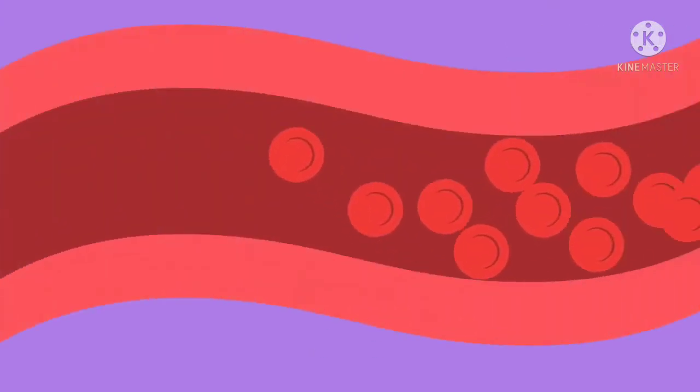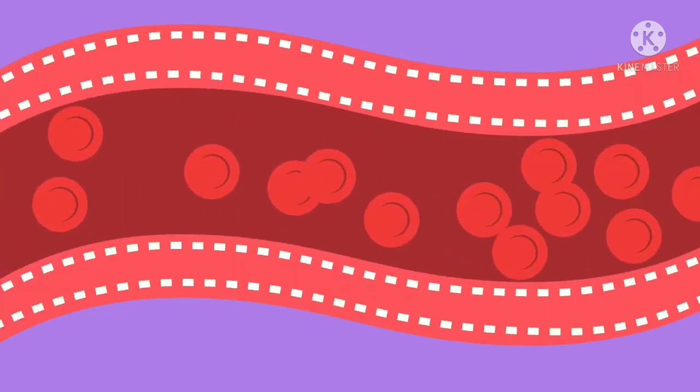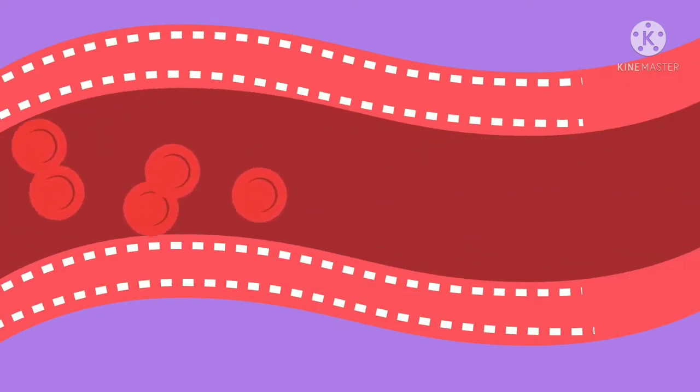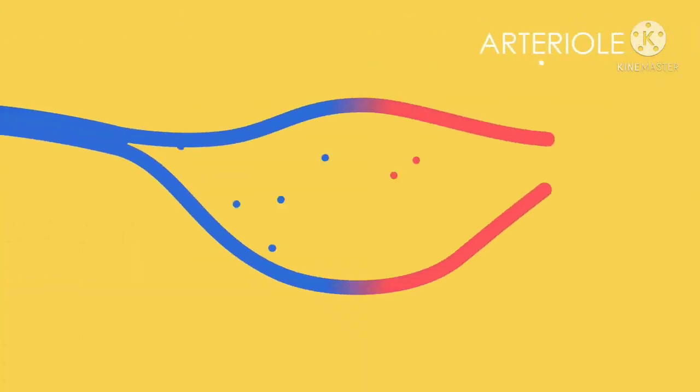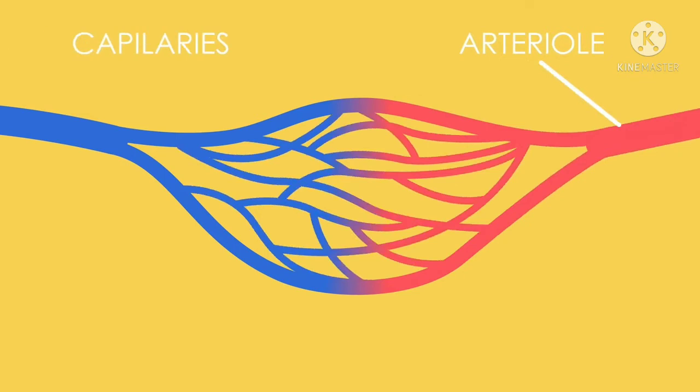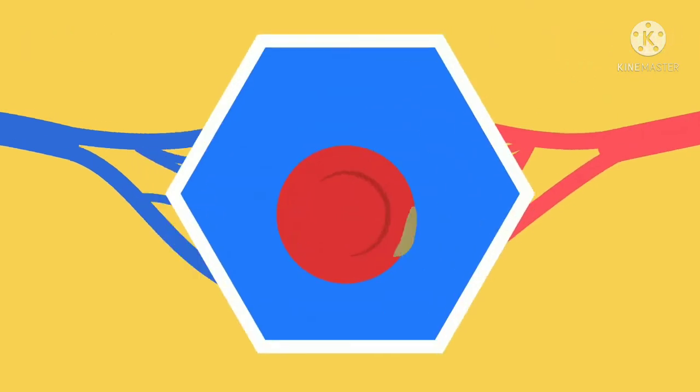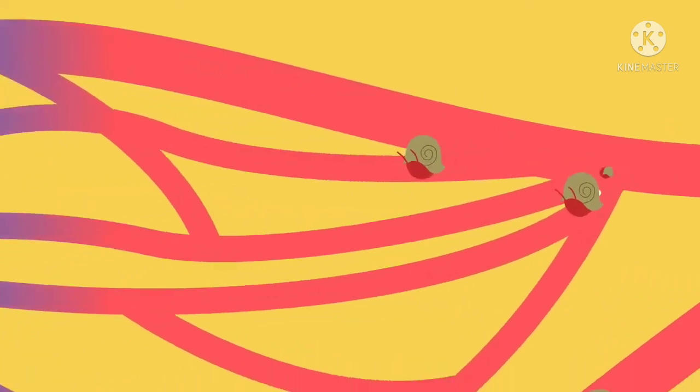Arteries have very thick muscular walls to withstand the pressure of very fast-flowing blood. These arteries branch into smaller arterioles, which then branch into smaller capillaries that surround all cells. The movement of blood slows down significantly at the capillaries